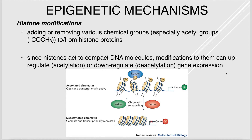We can also modify histones through acetylation — adding or removing acetyl groups. Histones compact DNA, but if we acetylate them, it opens up the DNA and upregulates gene expression. Removing acetyl groups compacts the DNA and downregulates gene expression.